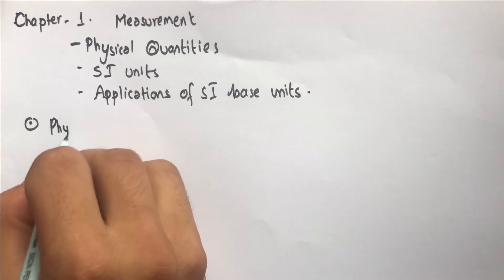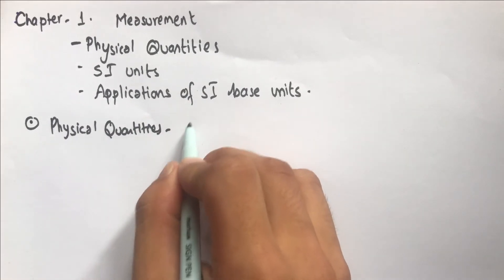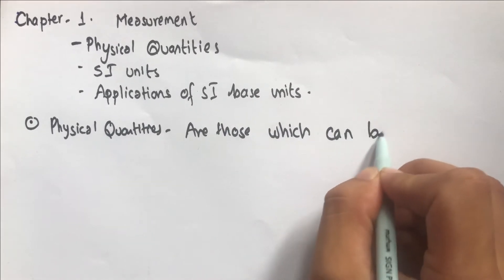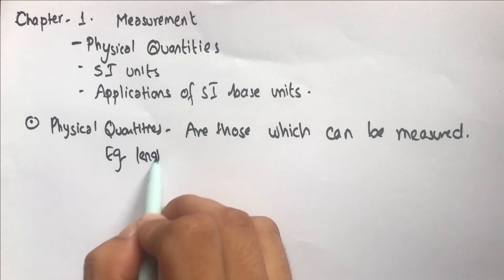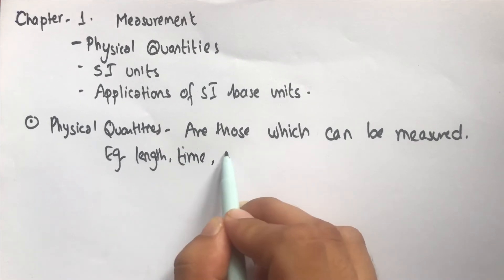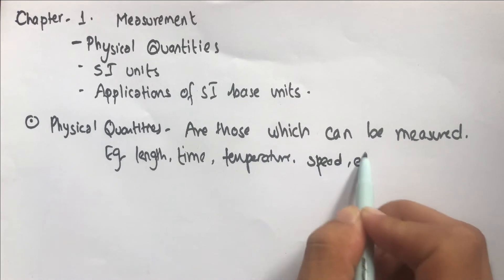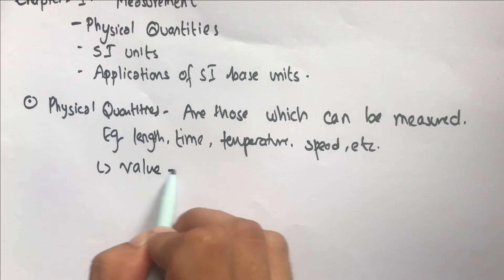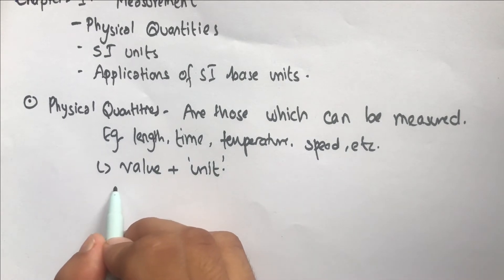Physical quantities are those which can be measured — for example, weight, length, time, temperature, speed, and so on. Every physical quantity consists of a value and a unit. A unit is basically what gives meaning to the value of the physical quantity. The value is sometimes also called magnitude.